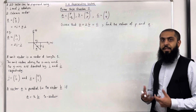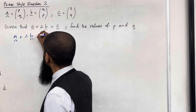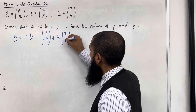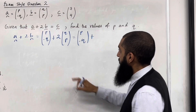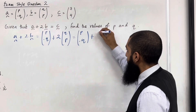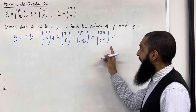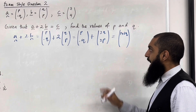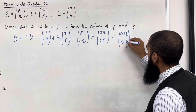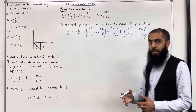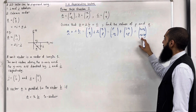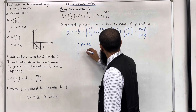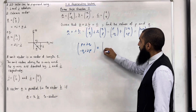Let's start by working out A plus 2B in its simplest form. A is the column vector (p, -q), plus 2 lots of B which is the column vector (q, p). So we can multiply q and p by 2, giving us (2q, 2p). Adding the two column vectors, the i component is p plus 2q, and the j component is minus q plus 2p. So the vector A plus 2B has i component p plus 2Q and j component minus q plus 2p. This vector must equal C which is (7, 4).